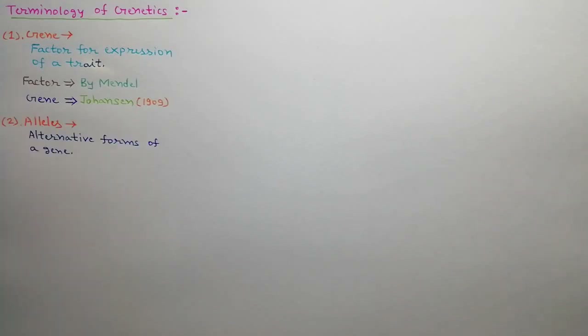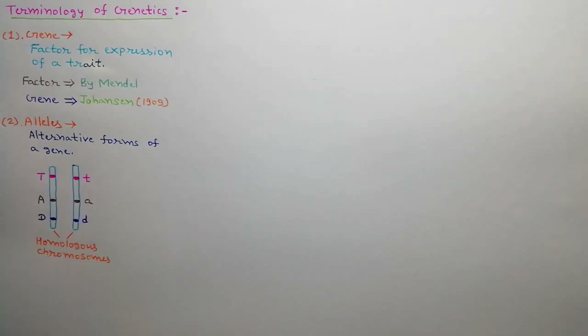Alleles are the alternative forms of a gene present at the same locus on homologous chromosomes. As shown in the diagram, T and t are alleles, A and a are alleles, and D and d are alleles, which are present on the same locus on homologous chromosomes.